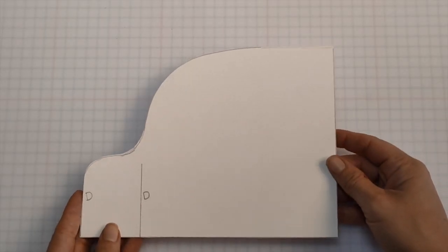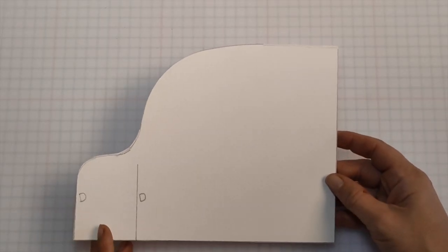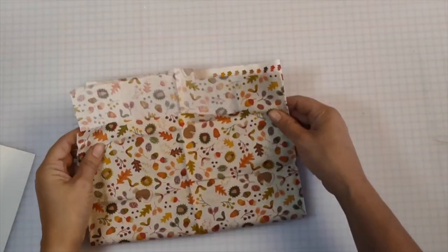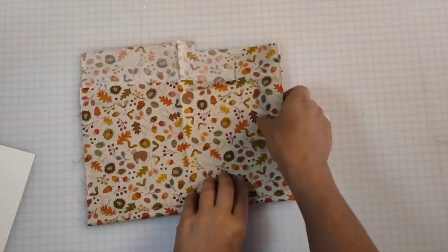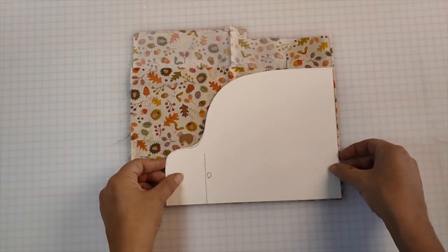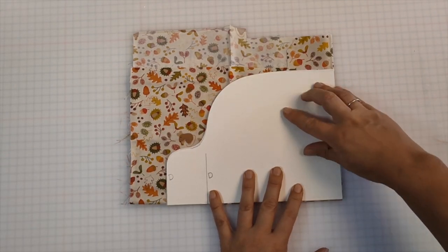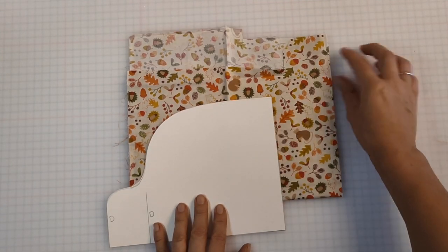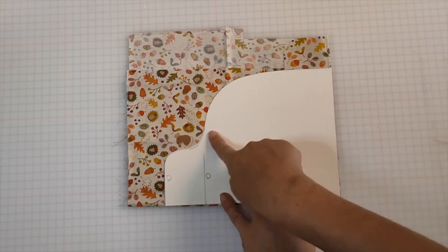Now that we have our template we're going to cut out all of our fabric pieces. Start off by taking your piece of fabric and folding it in half and then in half again. Place your template over the top and in the corner. You should have the single fold along the long edge of your pattern and the double fold along the short edge. Pat around the pattern.